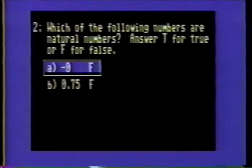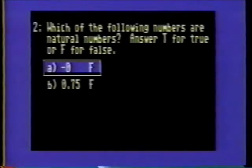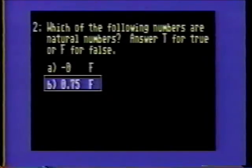Number 2. Which of the following numbers are natural numbers? Answer T for true or F for false. In problem 2A, zero is an unsigned number — it is neither positive nor negative, therefore it is not a natural number. The answer is false. In problem 2B, 0.75 is a number expressed in decimal form and hence could not be a natural number. Thus, the answer is false.